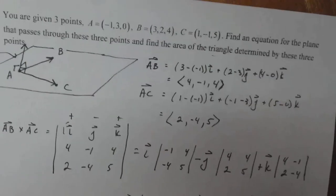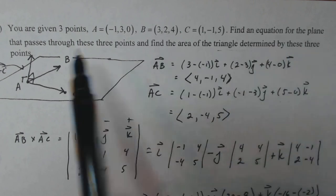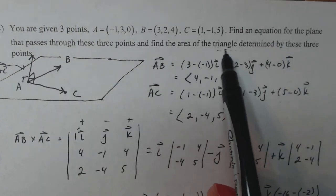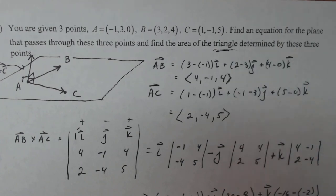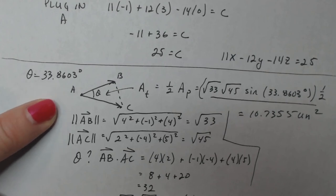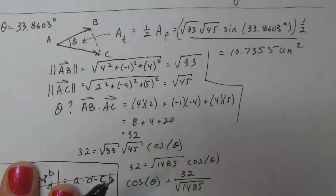So let's make sure we finished it. You're given these two points, find an equation for the plane that passes through these three points. We did. Find the area of the triangle, not the parallelogram determined by these three points. So in other words, we didn't do the whole parallelogram, just half of it. That was a tough problem. I hope you were able to follow.